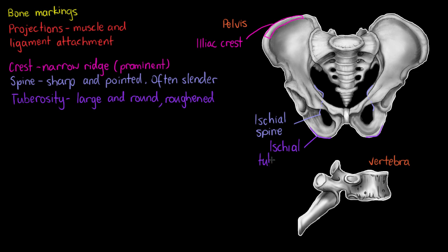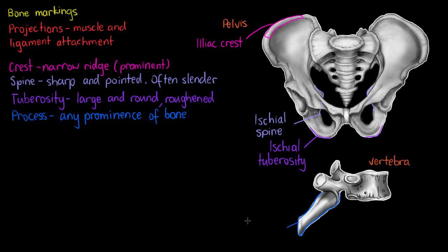We can see a common naming pattern forming, and we can get a handle on how to use it properly and abbreviate bone names correctly. The next marking is called a process — simply any prominence of bone on the body. Looking at the vertebra, this process pushing directly out from it is called the spinous process.